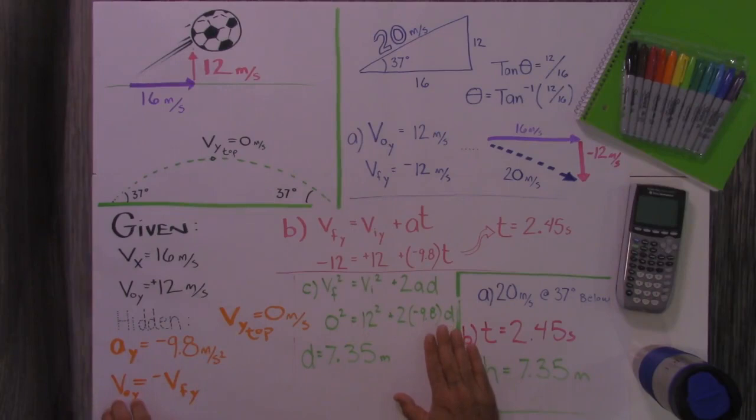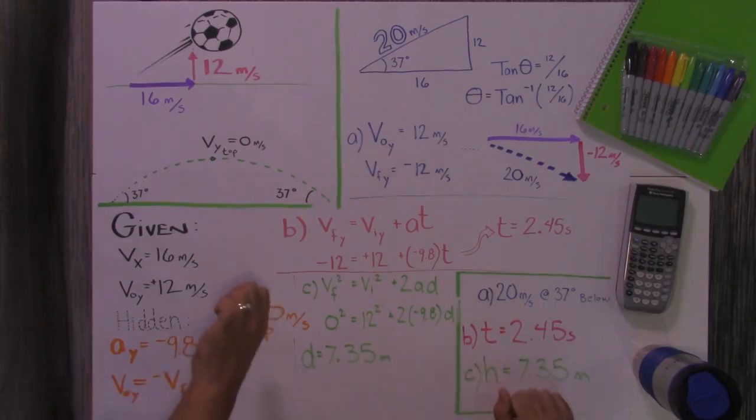The third hidden given that I use in this problem is that the initial velocity in the Y direction, which we know is 12, is the opposite of the final velocity in the Y direction, which is going to be downward at 12. Okay, here we go. So we're going to know everything that we need to know to solve it. Let's do it.